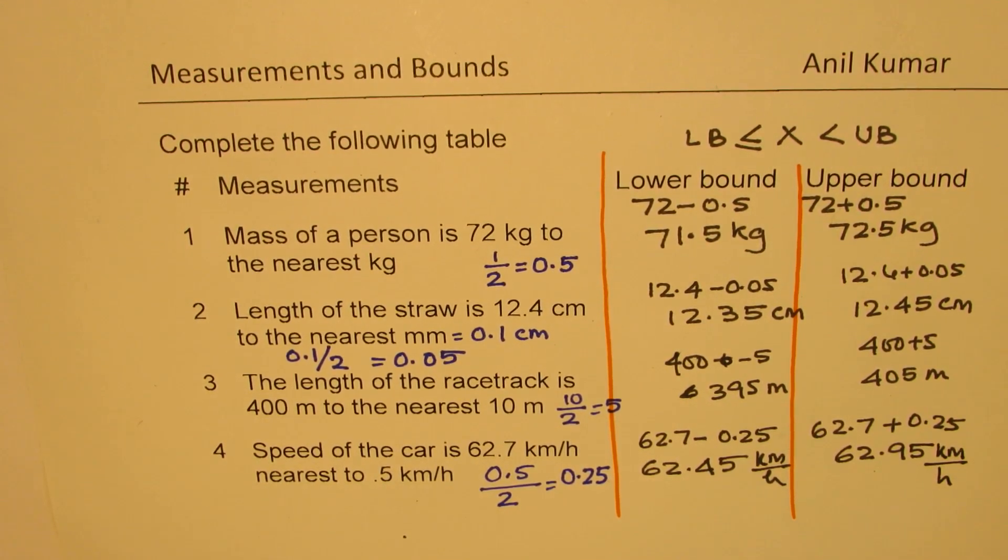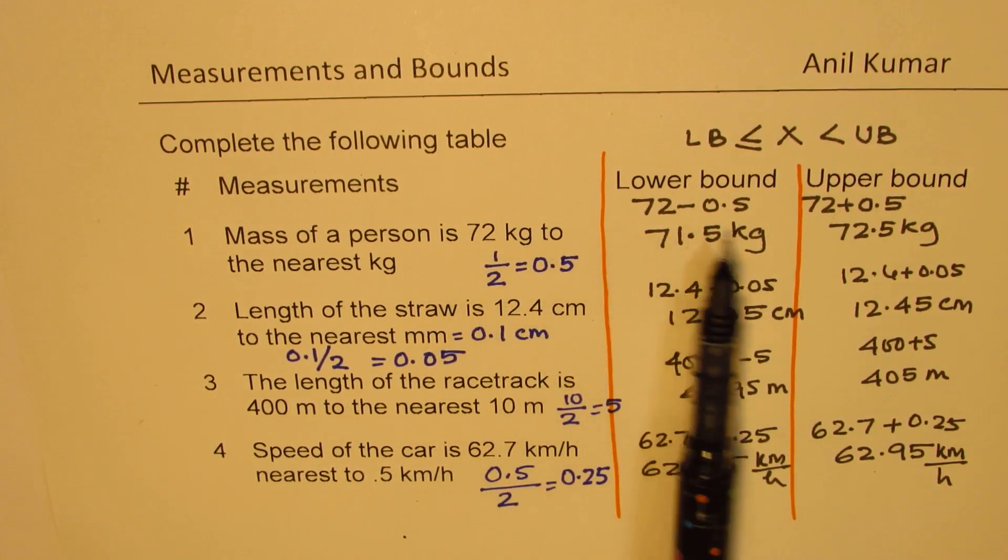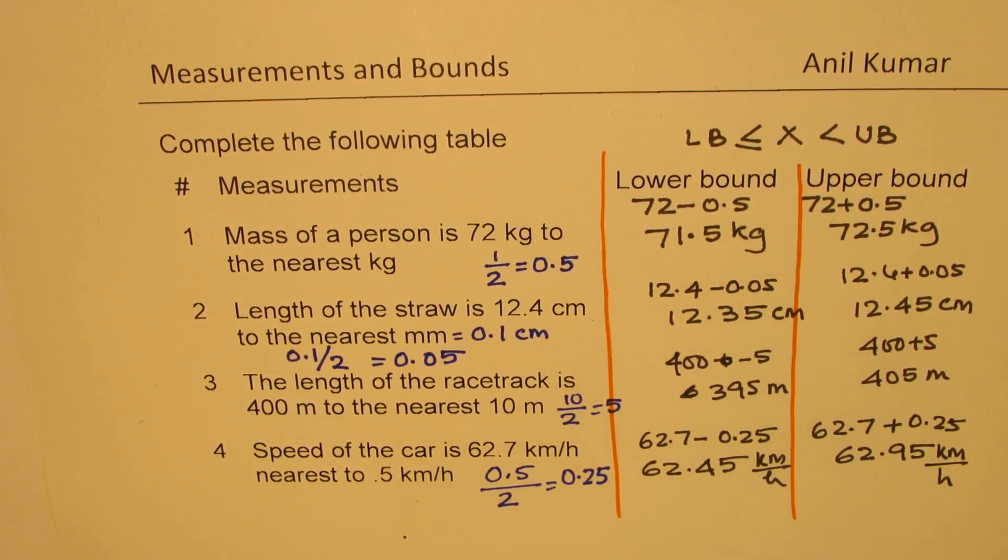So that is how we get lower bound and upper bound for the measurements. Now, these are very important since many of the equations may require to find the lower or the upper bound values for different calculations. So this basic that we have to divide it by 2 and then add and subtract to get our limits is very important to understand. Hope this is absolutely clear. Feel free to write a comment, share your views, and if you like and subscribe to my videos, that'd be excellent. Thank you and all the best.